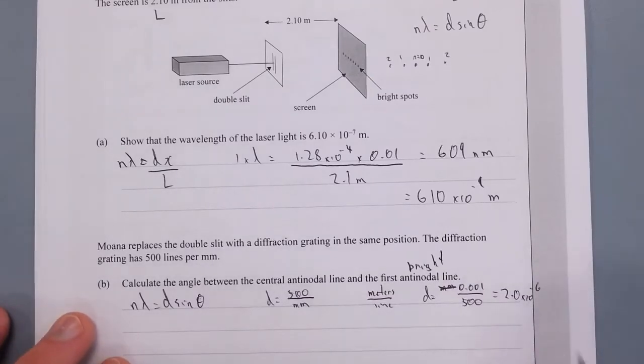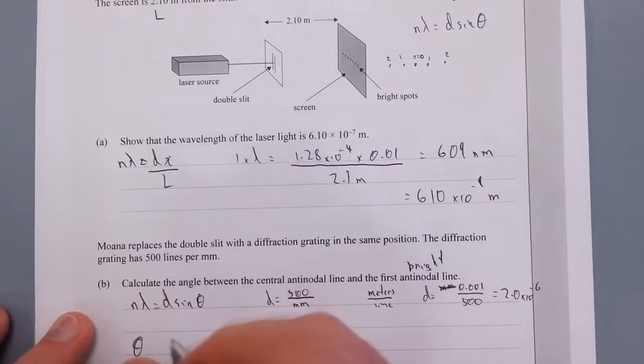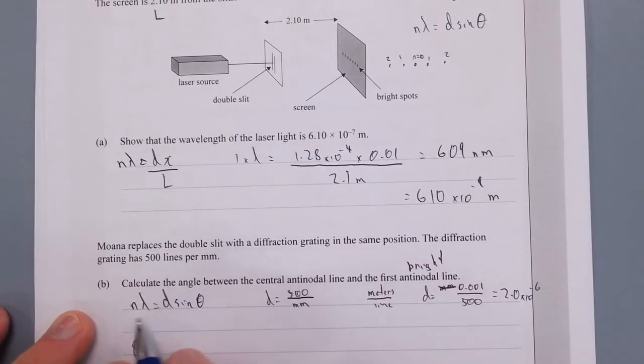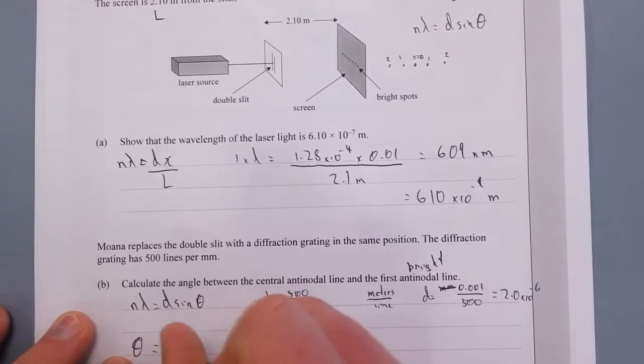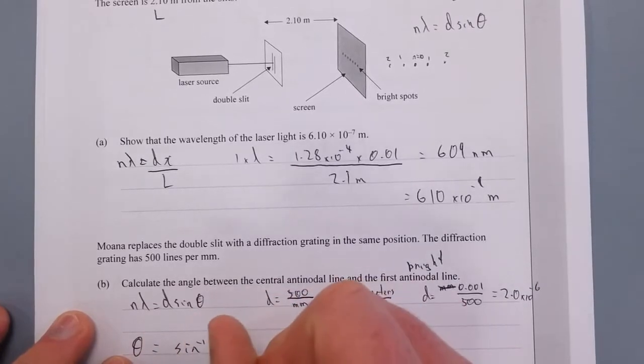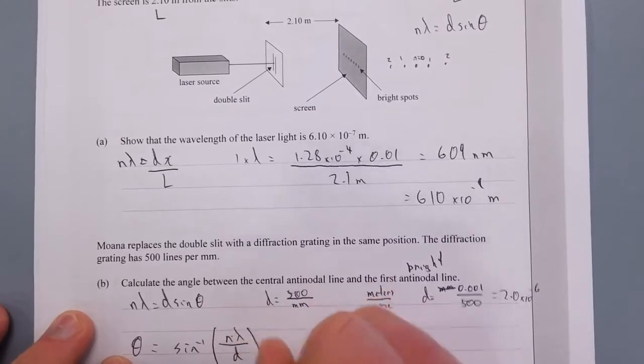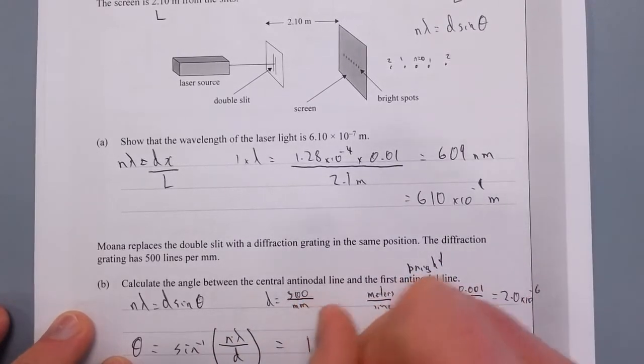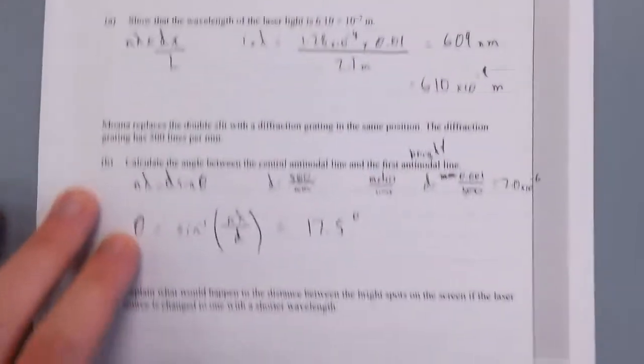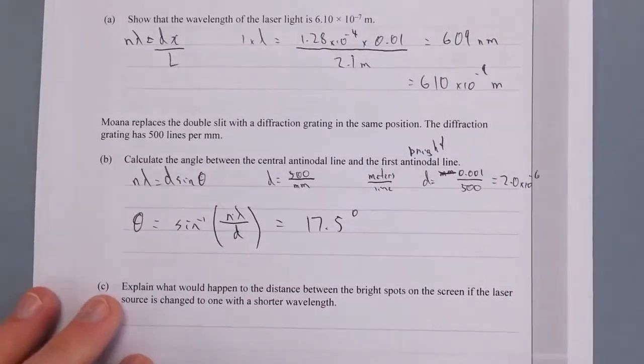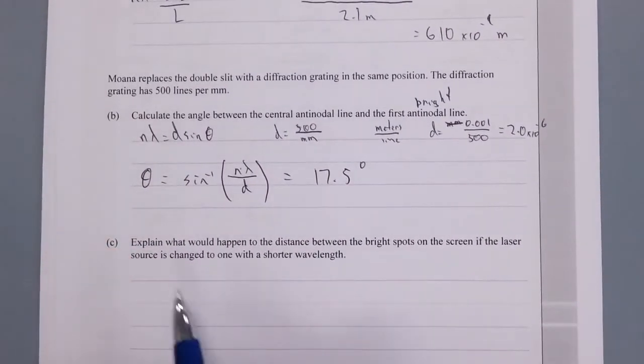Right. And from there, everything else is easy peasy. Right, let's rearrange. I'm going to move that d under, and I'm going to take the inverse sine of everything. So θ = arcsin(nλ/d). And that, once you plug that into your calculator, is 17.5 degrees. I don't think I need to put the numbers in for you to see what I'm doing.